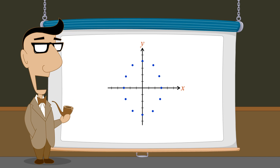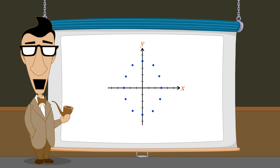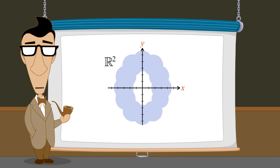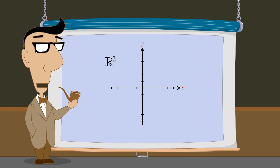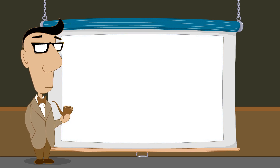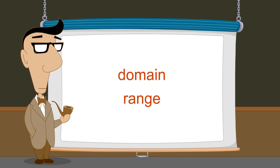As we saw, a binary relation between two sets is a subset of their Cartesian product. So this binary relation is a subset of the Cartesian product of the set of real numbers with itself, R², which consists of every point in the xy-plane. In the next lecture, we will introduce two important sets in any binary relation called the domain and the range of the relation.